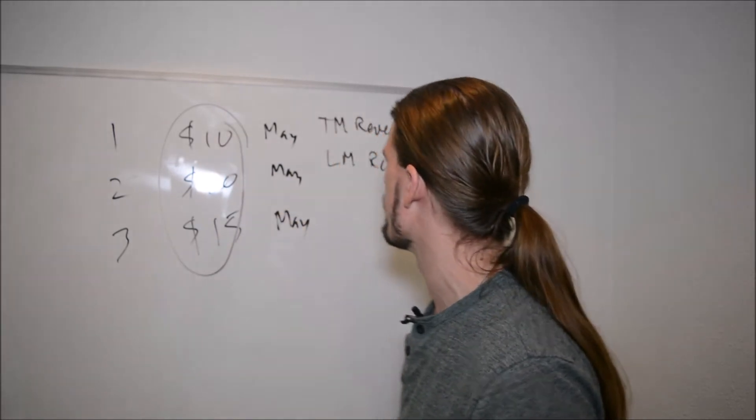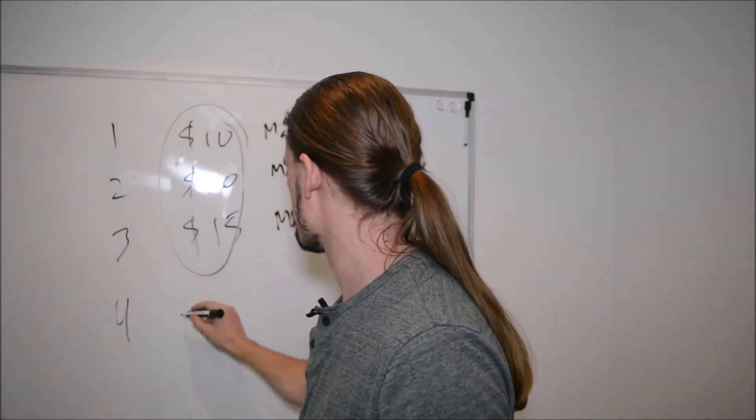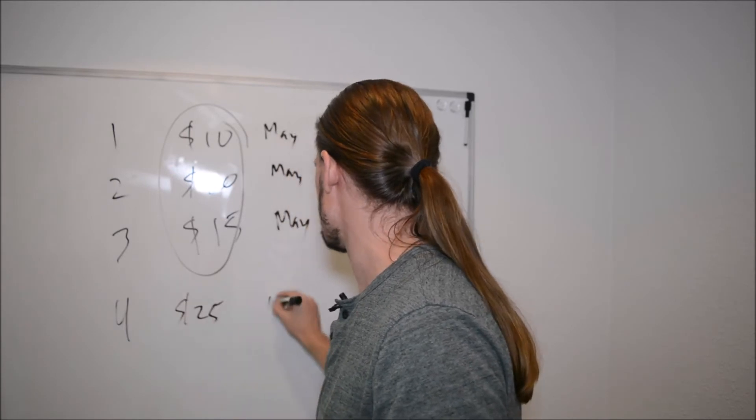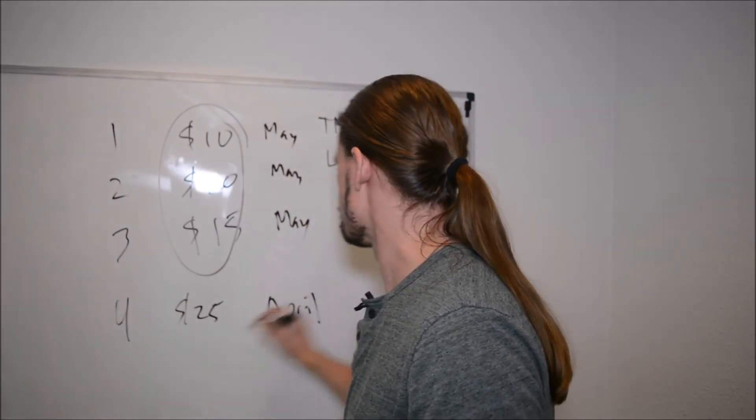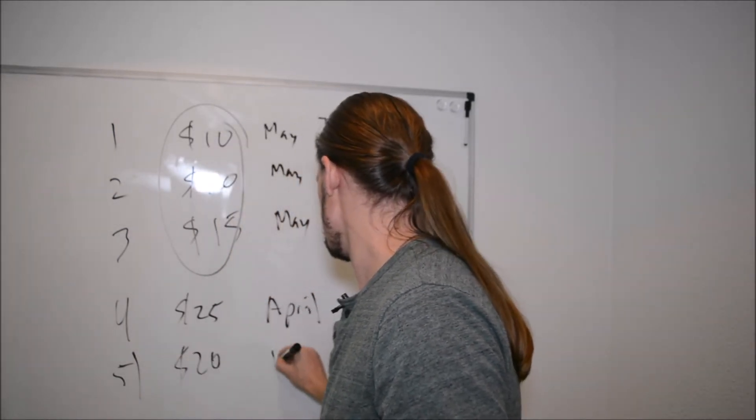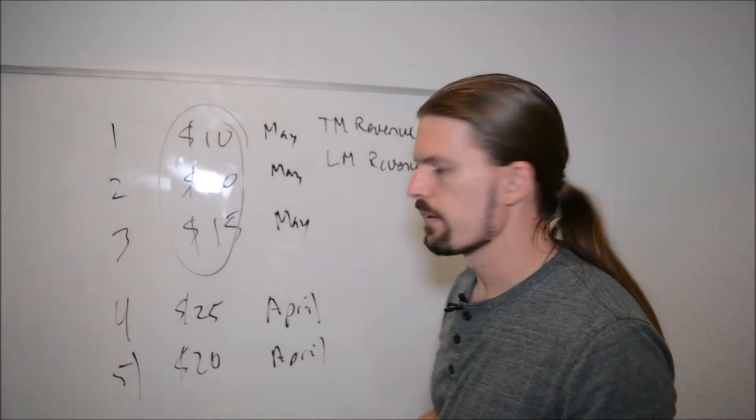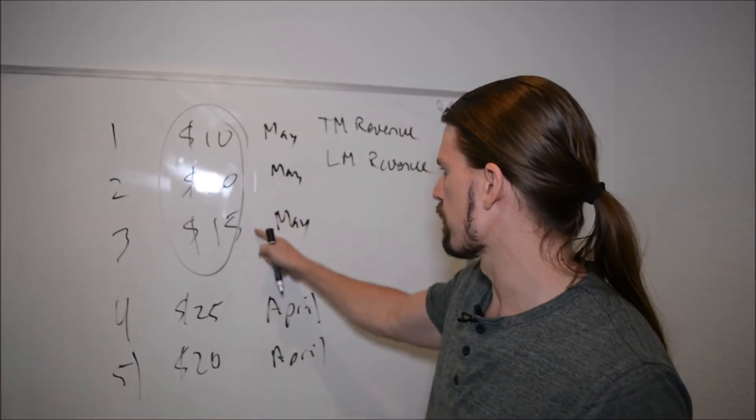Let's say that this month is May and last month revenue, right? So the first thing you have to do is you have to tell the computer to add this all up, add up all of the stuff for May and put that as this month revenue. And so let's write some for April here. So let's say 25 April, 20 April, right?